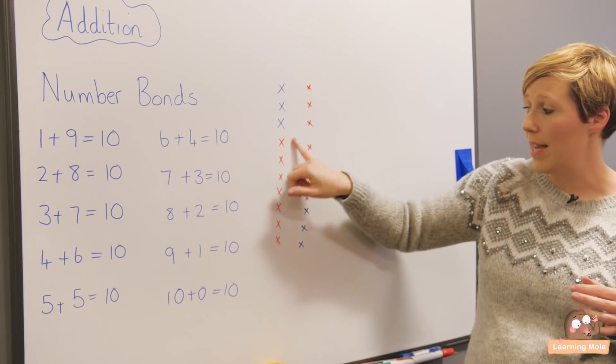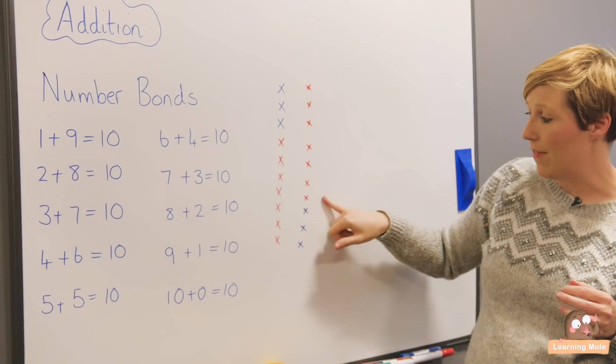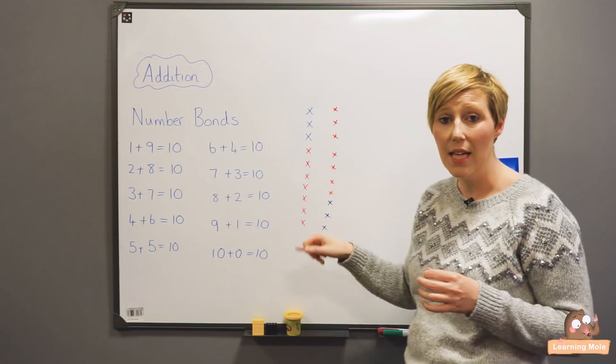So I've done my calculation. Three plus seven equals ten, and I've shown them that seven plus three is exactly the same. It equals ten.